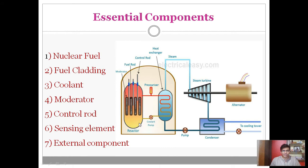In the case of Fukushima, the cooling pump was not able to work, and as a result, the temperature increased tremendously and caused an explosion. The seventh component is an external protective shield, which covers the nuclear reactor and protects the environment.